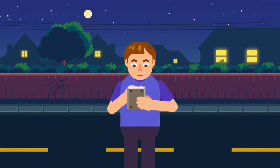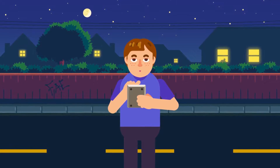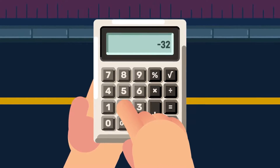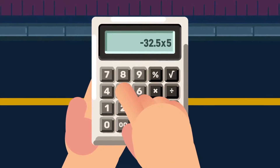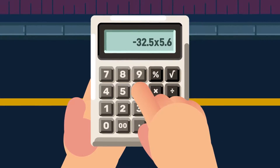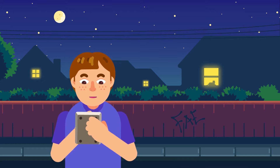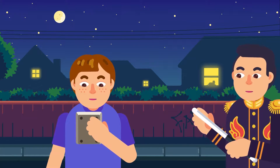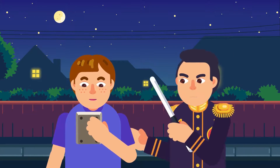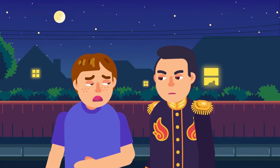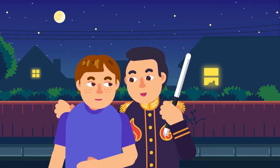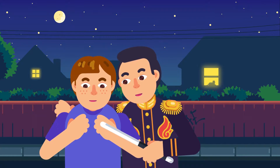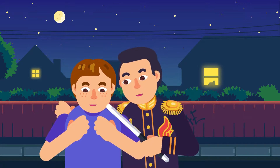If you take your standard calculator and do some math, you know that it's fairly easy to do calculations in integers and decimals. But what about rational numbers — how to write and do the operations in fractional form? You can get a scientific calculator, or you can get smarter and calculate it yourself.